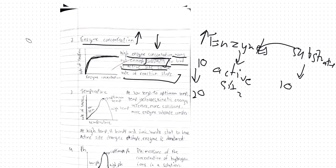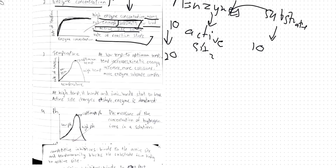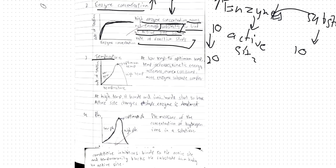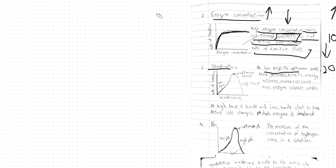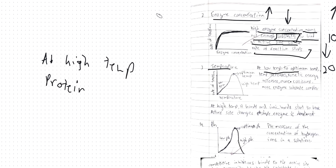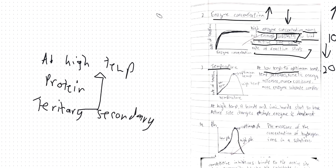The third thing that affects enzyme activity is temperature. At high temperatures, the proteins — remember I told you proteins have four structures — the tertiary and secondary structures can be affected by temperature changes. So if I have a high temperature, then the tertiary and secondary bonds and structures would break because they have hydrogen bonds.